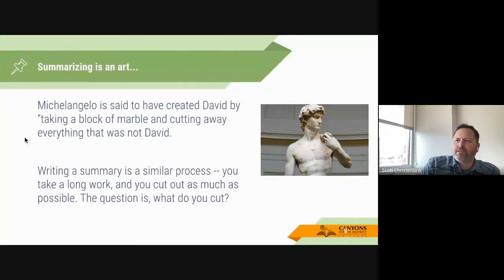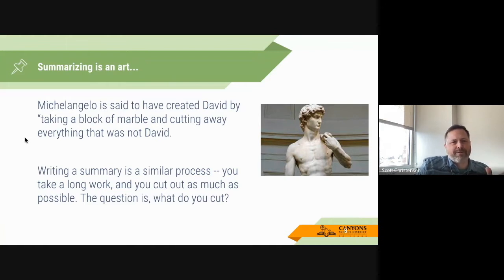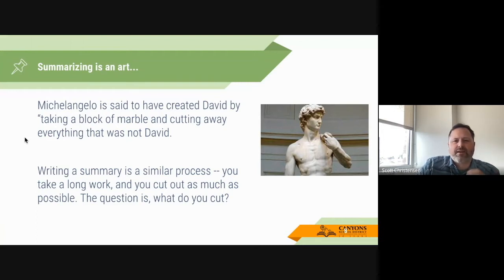I saw this Michelangelo quote — someone asked him about how he created David. He basically took a block of marble and cut away everything that wasn't David. Our kids are doing kind of the same thing when we're summarizing. We have a block of marble — that's that ten-page piece or three-page piece — and to summarize is to get that thing all the way down to its essence, just like Michelangelo did with David. So summarizing is an art, and like any art, you've got to practice it to get better at it.